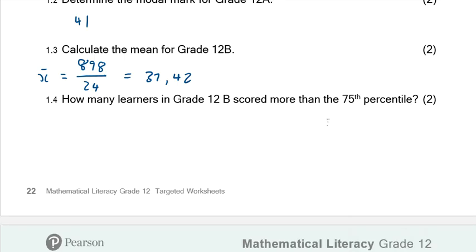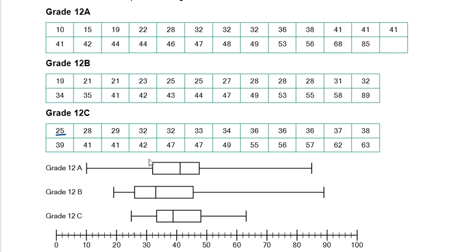Question 1.4: How many learners in 12b scored more than the 75th percentile? We know the minimum is 0%, Q1 is the 25th percentile, Q2 is the 50th percentile, and Q3 is the 75th percentile, with the maximum representing 100% of all values. So we need to find the 75th percentile value by reading it off the box and whisker plot.